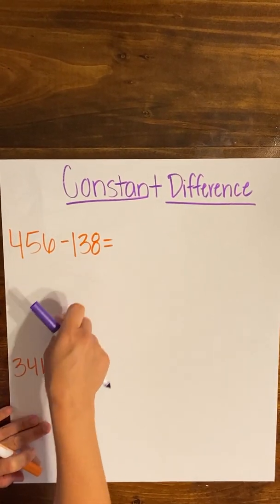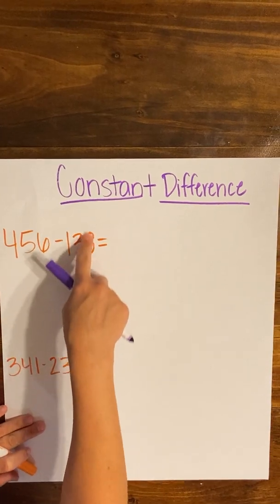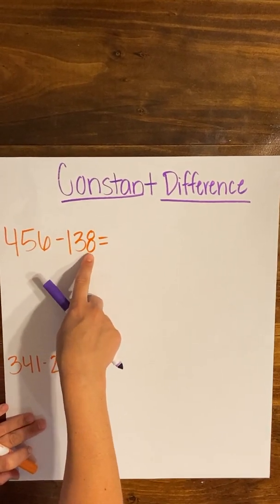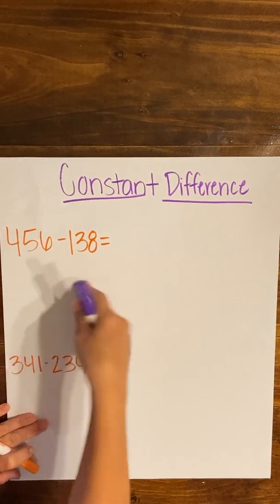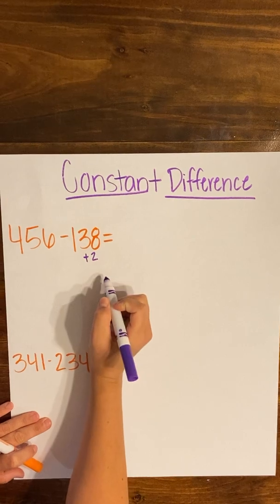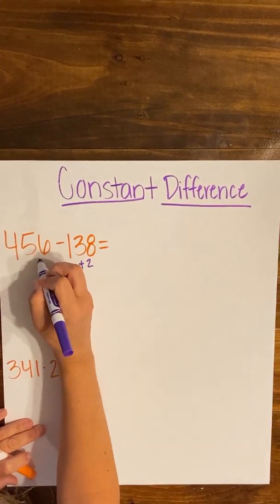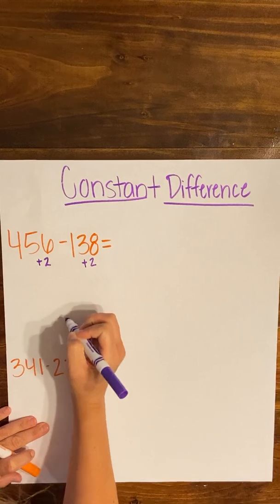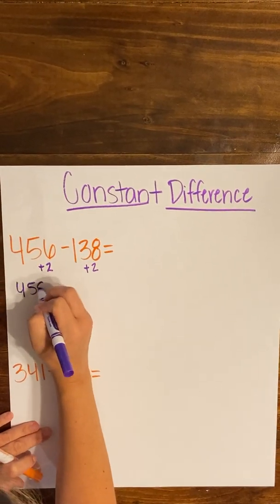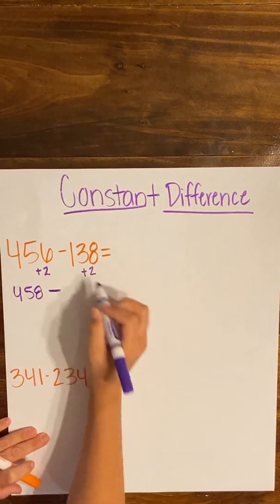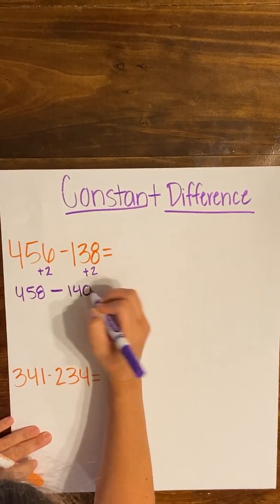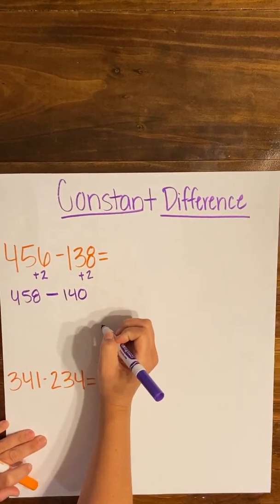I want 138 to be easier to work with and get rid of this eight in the ones place. So I'm going to make 138 into 140 by adding two. And because we're keeping it constant, I'm also going to add two to the 456. So 456 plus two is 458, still subtracting, 138 plus two is 140. So now I don't have to worry about any regrouping.